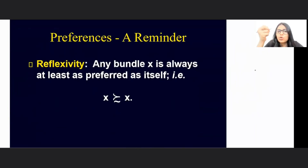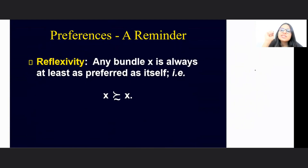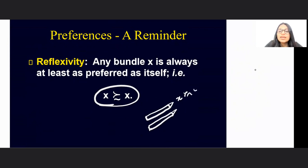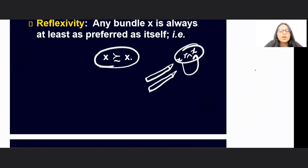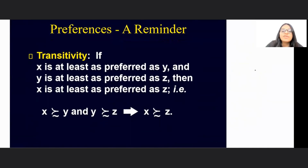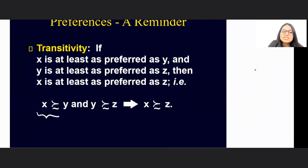Then we went ahead and talked about Reflexivity, where we said that any bundle is as good as itself. For example, if I give you two pencils that are exactly the same — two Natraj pencils — and I ask you which pencil you would prefer, you should prefer the two equally. Any bundle should be as good as itself. Then we went ahead and talked about Transitivity, where we said that if X is at least as good as Y...